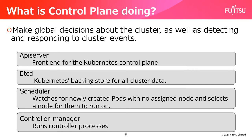etcd is a key-value store that holds all data about cluster state and configuration. The cluster behaves according to the states stored in etcd. The scheduler watches for newly created pods with no assigned nodes and selects the nodes for them to run on. It determines the nodes to schedule according to various conditions such as cluster state and user settings. The controller manager runs multiple controller processes. Each controller manipulates objects and updates the cluster to move the current state to the desired state.